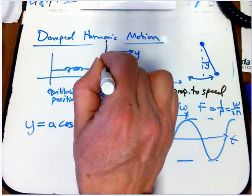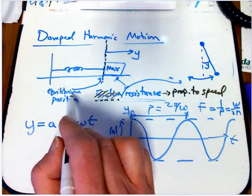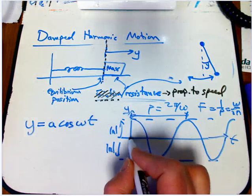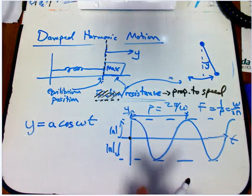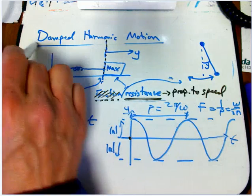We're always going to measure things from an equilibrium position, so that if you started at y equals zero, it would just stay there. So how do we incorporate resistance? This is called damping.